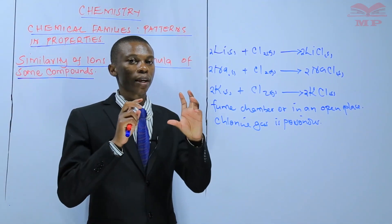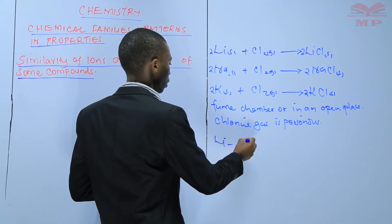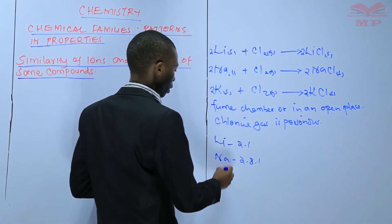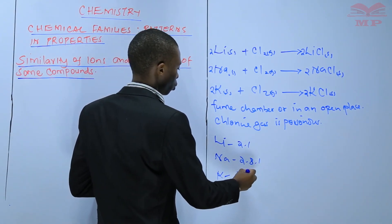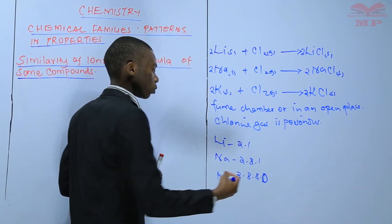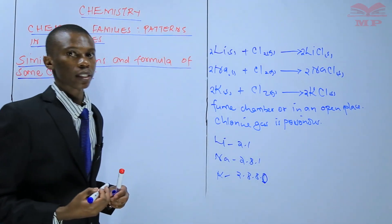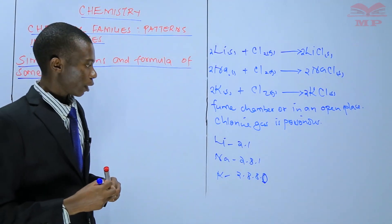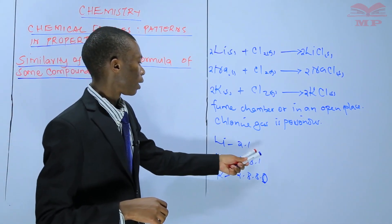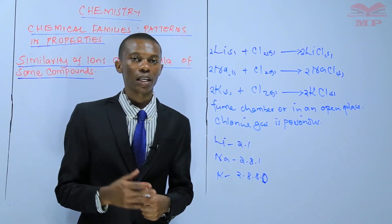If you compare the electron configurations: sodium is 2, 8, 1 and potassium is 2, 8, 8, 1. So that one electron in potassium is far away from the nucleus and is loosely held. That's why it is so easy to lose it compared to the one electron in sodium and lithium. That is what we learned in the previous lesson.